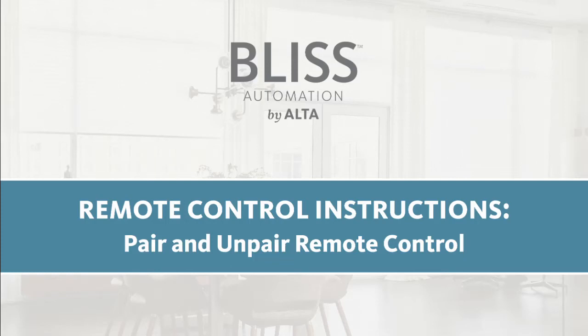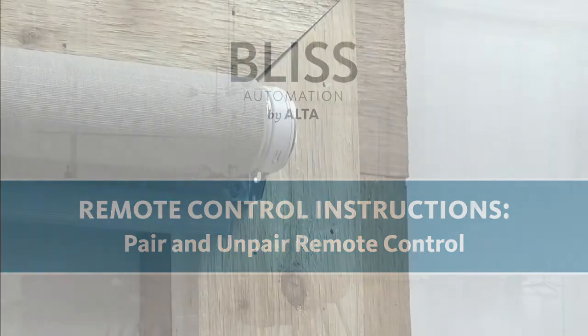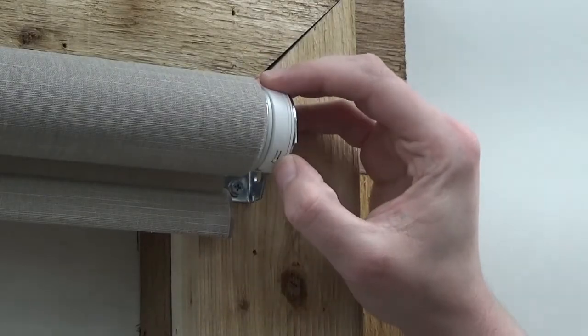In this video we will show you how to pair and unpair your Bliss remote to your Bliss shades. First, locate the P1 programming button on your shade.